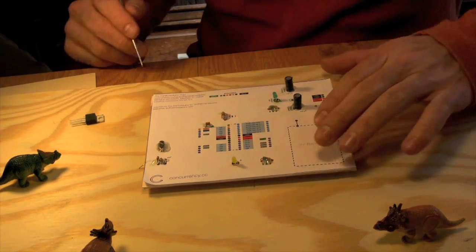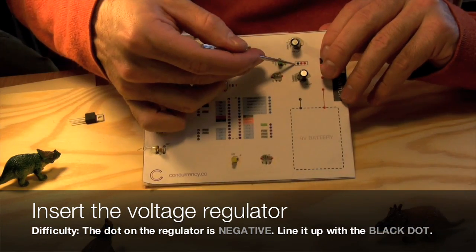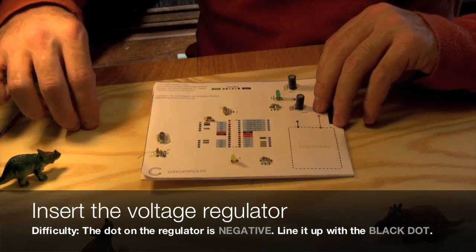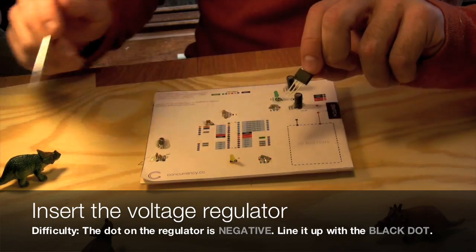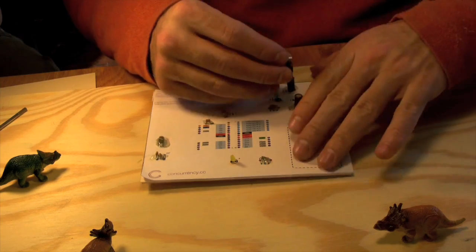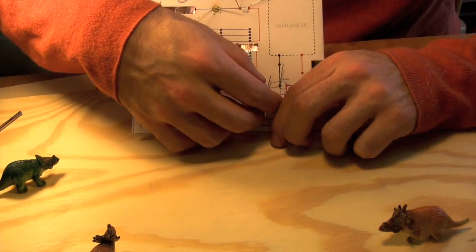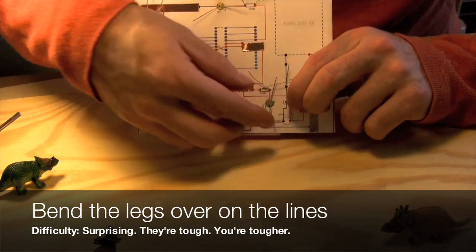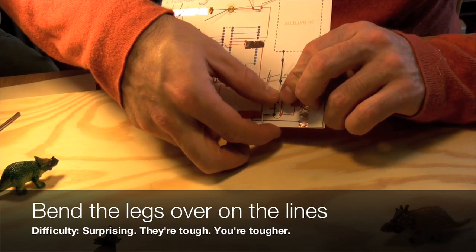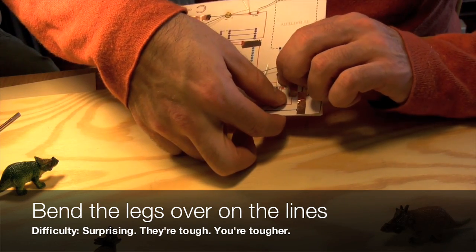The next step is to insert the voltage regulator. The voltage regulator takes high voltages, like our 9-volt battery, and brings it down to 5 volts, which is what our tiny computer needs. Notice there is a dot on the voltage regulator. That lines up with the negative pin on the board, the black dot. On the back, bend the legs over so they follow the lines, and then secure the voltage regulator on the top with some more of your favorite thing, hot glue.